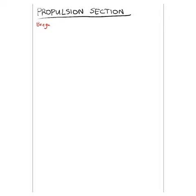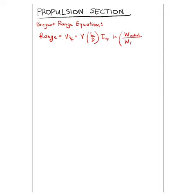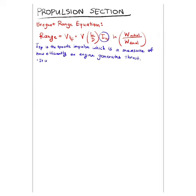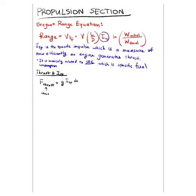So here's where the propulsion section starts coming in. So let's rewrite the Breguet range equation. And now you see this parameter ISP, which is the specific impulse, and that's a measure of how efficiently an engine generates thrust. And it is inversely related to SFC, which is specific fuel consumption.